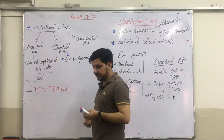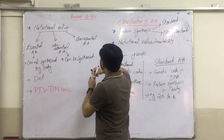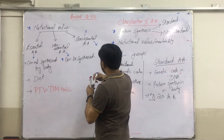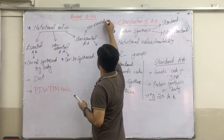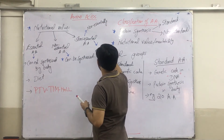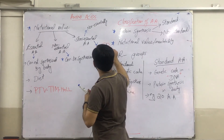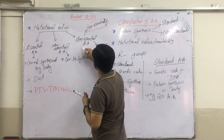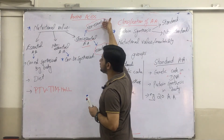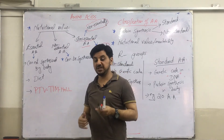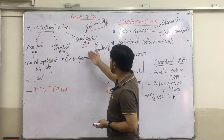The third category, introduced later on, is semi-essential amino acids. Semi-essential amino acids are such type of amino acids which behave both non-essentially as well as essentially. The question is: in what conditions do these semi-essential amino acids behave essentially?